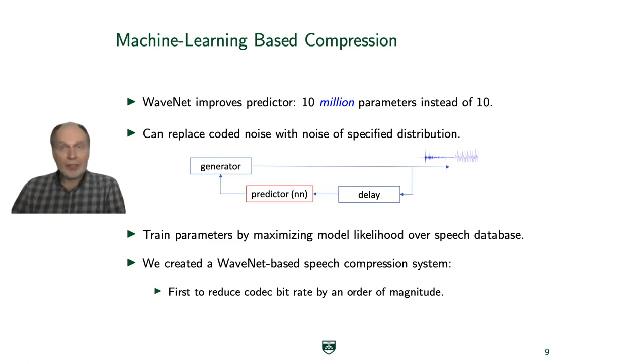We have to train these systems on a very large database, these 10 million parameters to find them. But the end result is that we can code speech now at about three or four kilobits per second with a quality that is as good as it was before at 25 or 30 kilobits per second. We've reduced the information rate by a factor of 10. We were the first to build such a system in 2018.